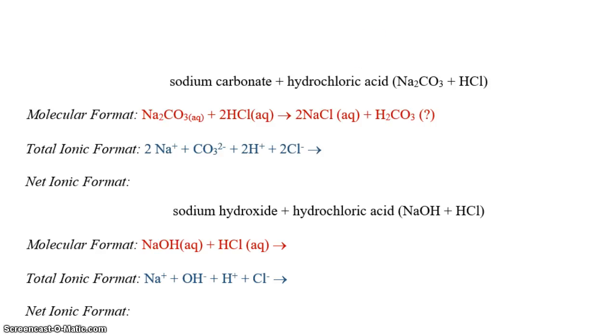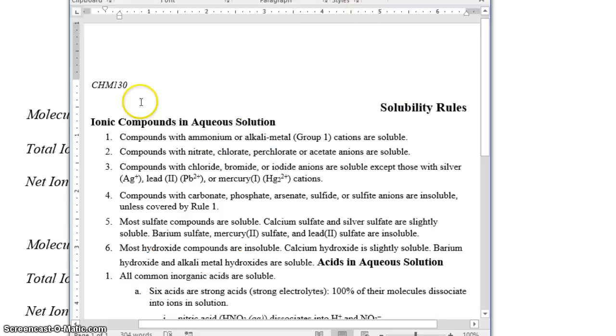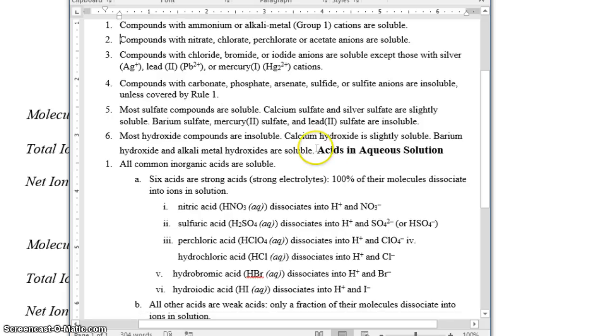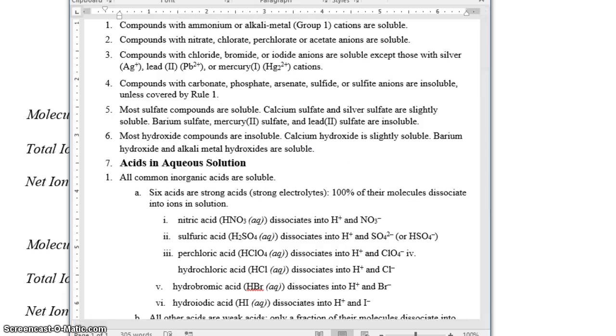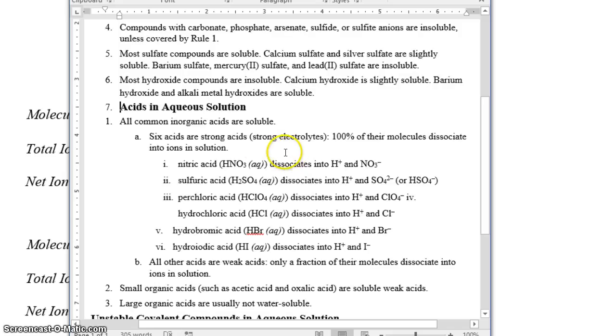But let's take a look at the solubility rules for carbonic acid. So here are the ionic compound rules, and now let's go down to the acids and aqueous solution rules. It says all common or inorganic acids are soluble, and the strong acids dissociate completely in solution. Let's look at the strong acids.